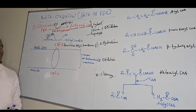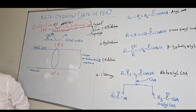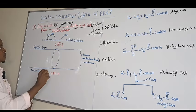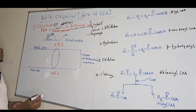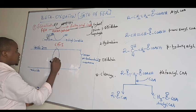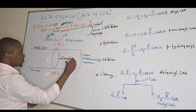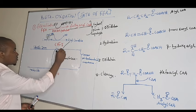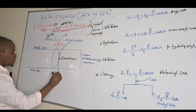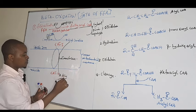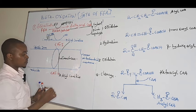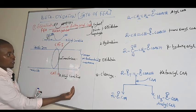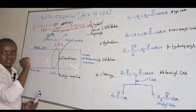This acyl-carnitine formed in the cytosol needs to be transferred into the mitochondria, because we know beta oxidation occurs in the mitochondria. We use an enzyme known as translocase, which transfers acyl-carnitine from the cytosolic side of the mitochondria into the matrix side. So we now have acyl-carnitine in the mitochondrial matrix.